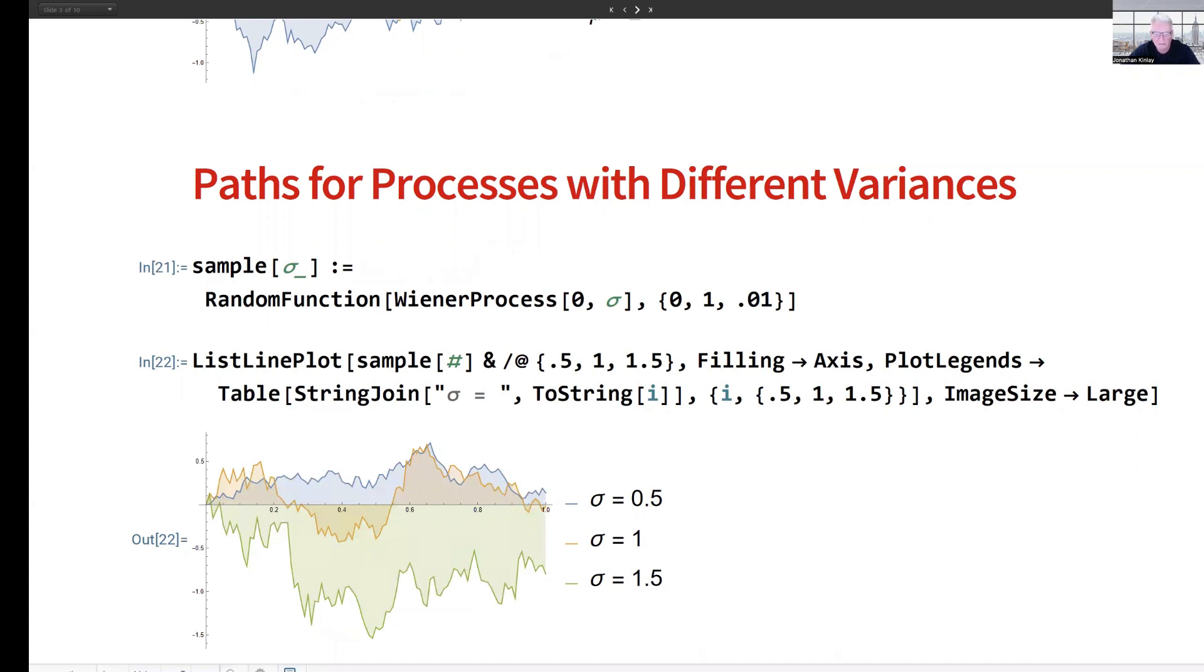Generally speaking, you can see that the process with the smallest standard deviation, 0.5, tends to stick fairly closely to the x-axis, and as sigma increases to 1 and then 1.5, the process tends to wander further away.